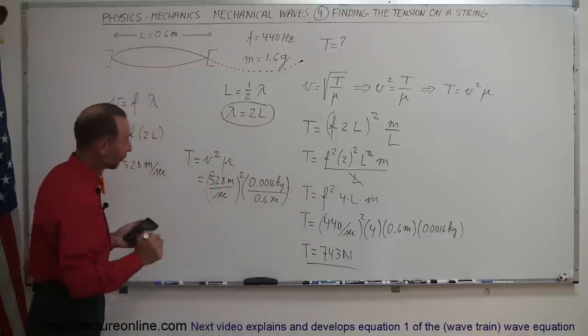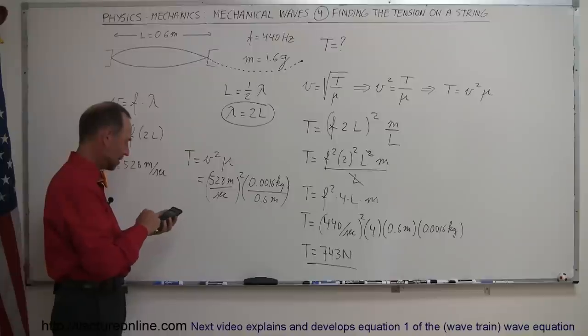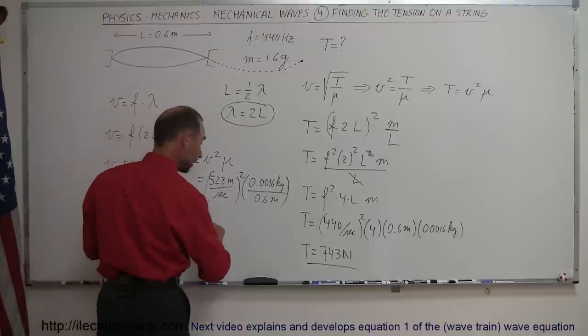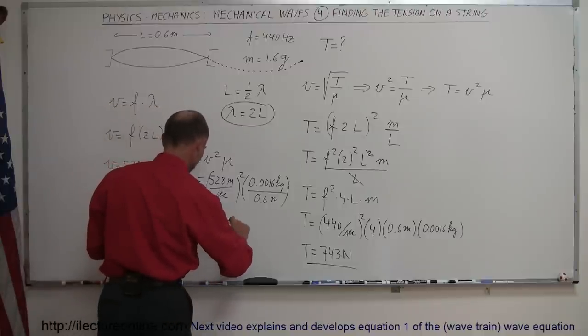Let's see if we get the same result. Hopefully we do. So we get 528 we square that, times 0.0016 divided by 0.6 equals, and we get again, yes, 743 Newtons.